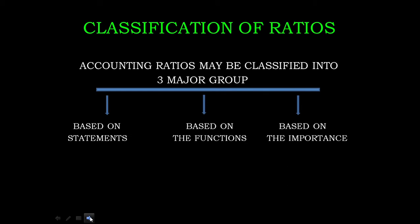The first one is based on statement — in the same statement the ratio is calculated. The second one is based on the functions — we will analyze and compute the ratio. The third one is based on the importance. So the 3 classifications are: based on statements, based on functions, and based on importance.